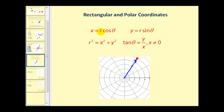Now let's look at the relationship between rectangular and polar coordinates. For point P, we sketch a reference triangle using the ray as the hypotenuse, where the horizontal leg is x, the vertical leg is y, the hypotenuse is R, and the angle is theta. Since it is a right triangle, x² + y² = r², and the tangent of theta equals y over x.